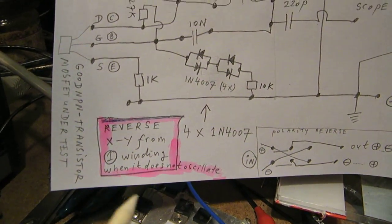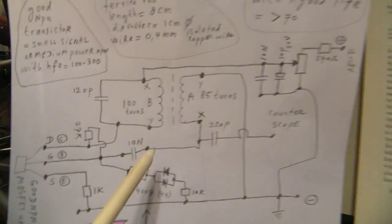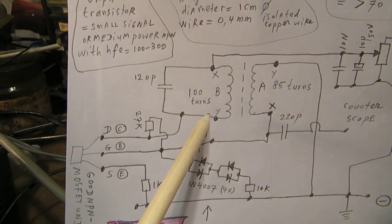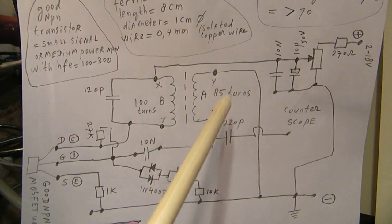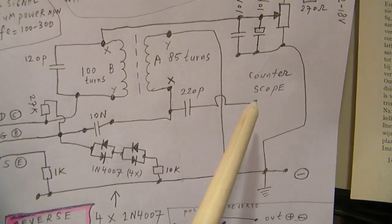When the whole thing does not oscillate, reverse one of the windings. That doesn't matter. Here is the output to the counter and the scope.